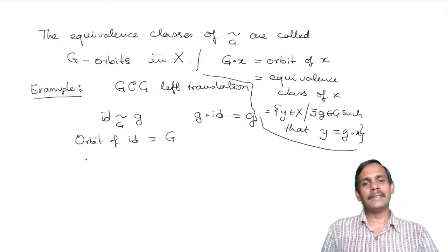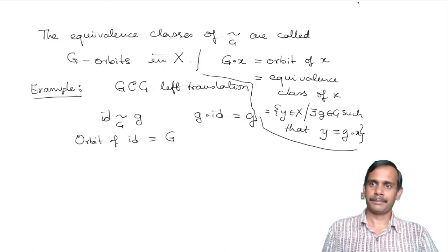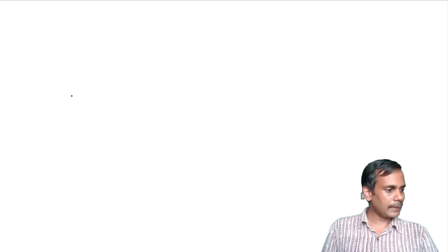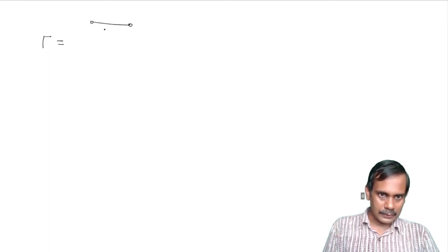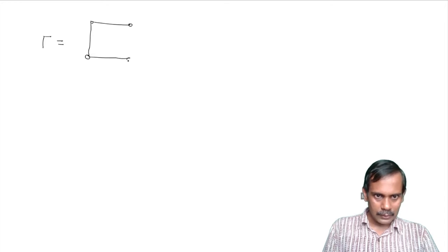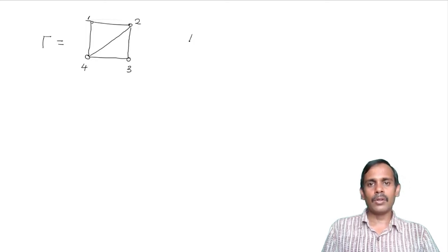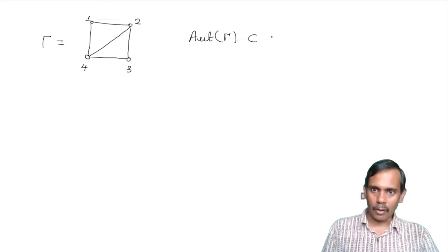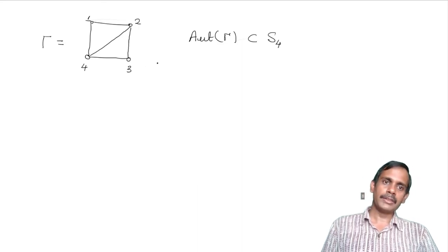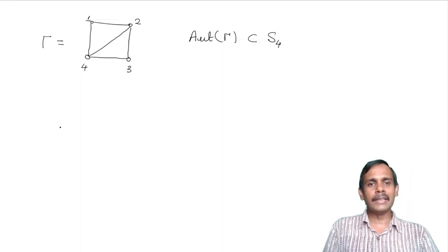For the left translation action, the orbit of the identity element is all of G. This is because G dot identity equals G, so you can get any element of the group G by applying that element itself to the identity. So in the left translation action, the orbit of the identity is the entire set X, which here equals G.